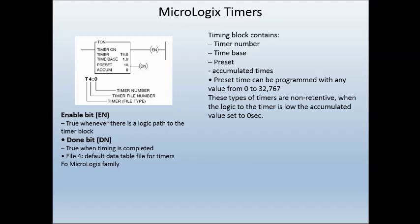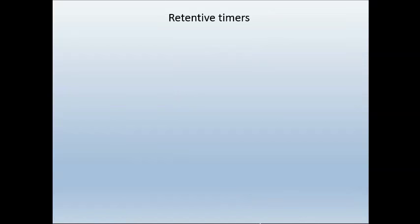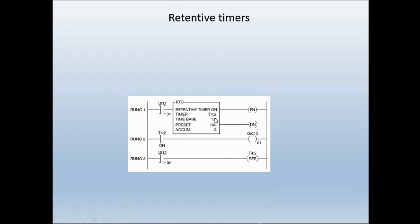Some bits on our timer that we can use in our logic: the enable bit is true whenever the logic path in front of the timer is true. The done bit is only true when the preset and the accumulated value are the same — so when I set the preset to 10 seconds, when the accumulated value reaches 10 seconds, the timer becomes done. File 4 is the default data table for timers. The first word stores the enable bit, the timer timing bit — which is true whenever the timer is timing — and the done bit. The second word stores the preset value, and the third word stores the accumulated value.